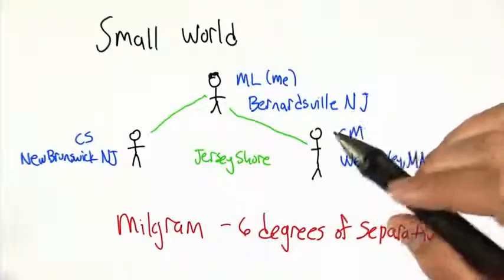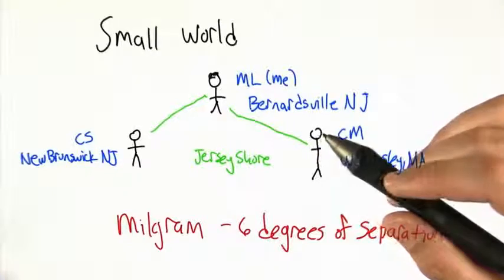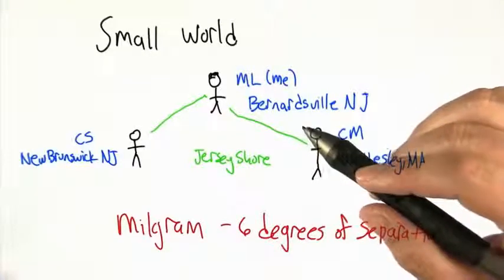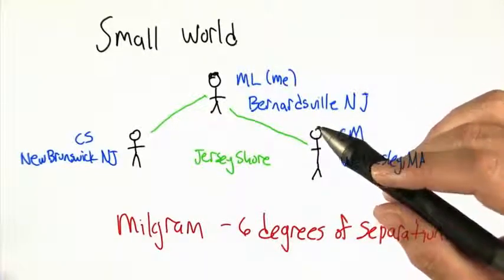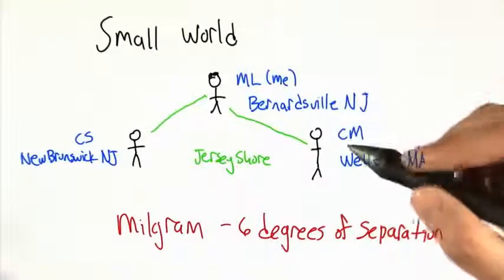In graph theoretic terms, what we say is that a graph exhibits the small world phenomenon if nodes have relatively small degree, but also a relatively short path to other arbitrary nodes. And social networks seem to exhibit exactly this property.